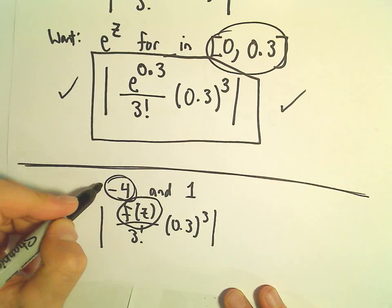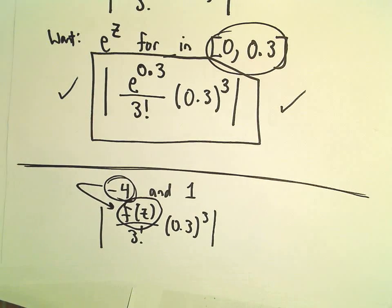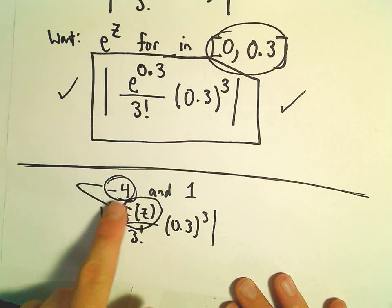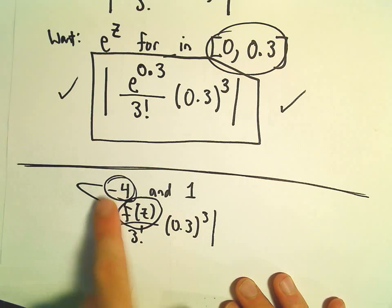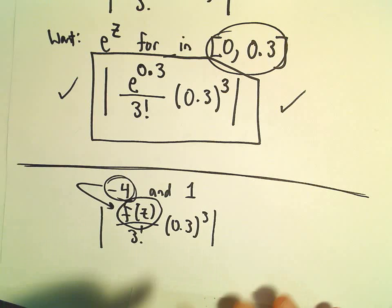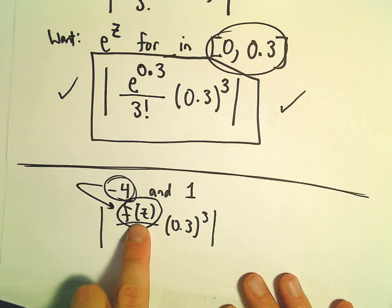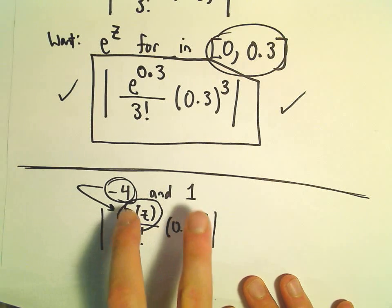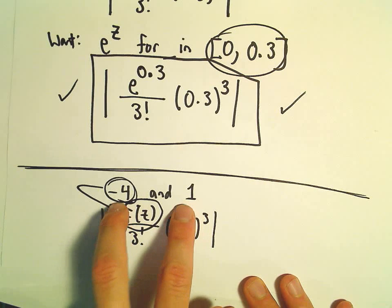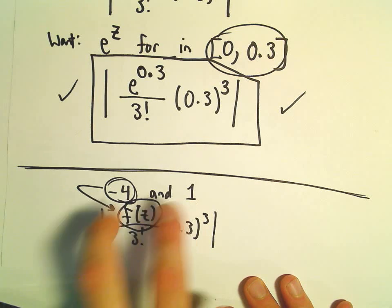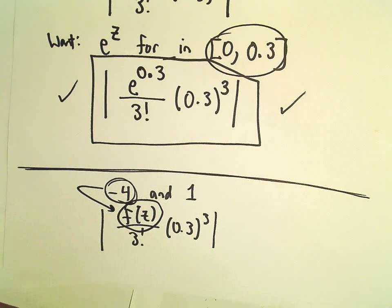We're trying to make this absolute value expression as large as possible. So in that case, we would actually plug in negative 4 because when we take the absolute value, we'll get positive 4, and that's going to be a number much larger than 1. So when I say make an expression as large as possible, really think about taking the absolute value of basically the range of that function. We're trying to make an expression as large as possible.